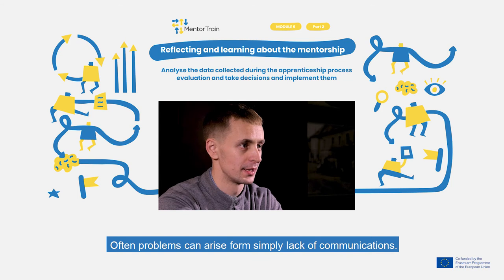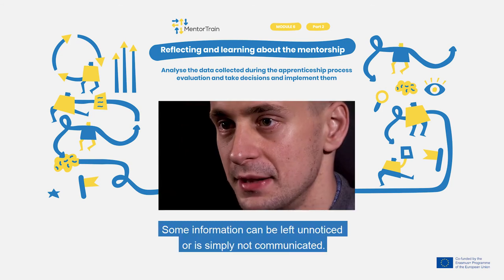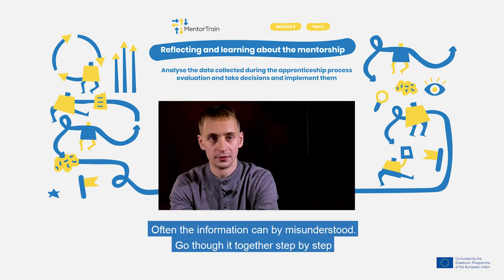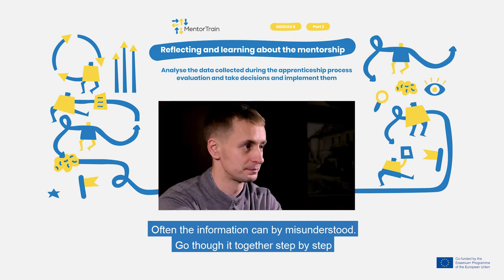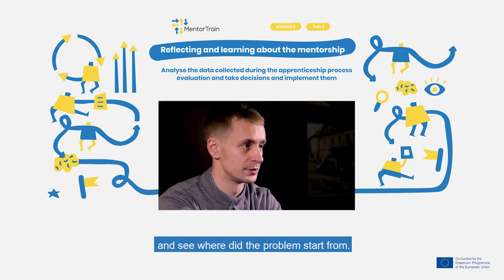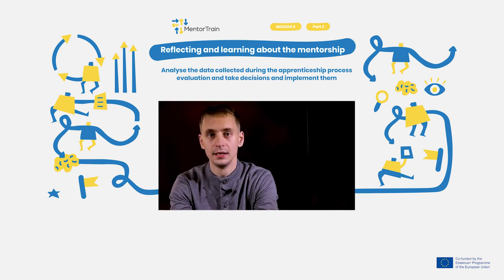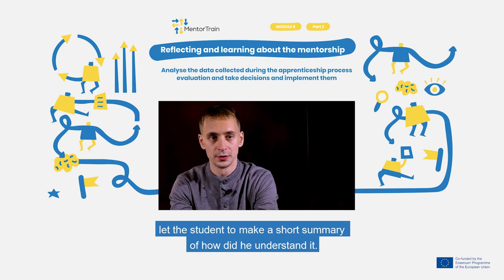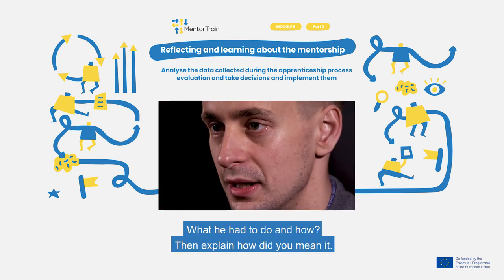Often problems can arise from simply a lack of communication. Some information can be left unnoticed or is simply not communicated, and often information can be misunderstood. Go through it step by step and see where the problem started. If the problem was about understanding the information, let the student make a short summary of how they understood it, what they had to do and how. Then explain how you meant it.